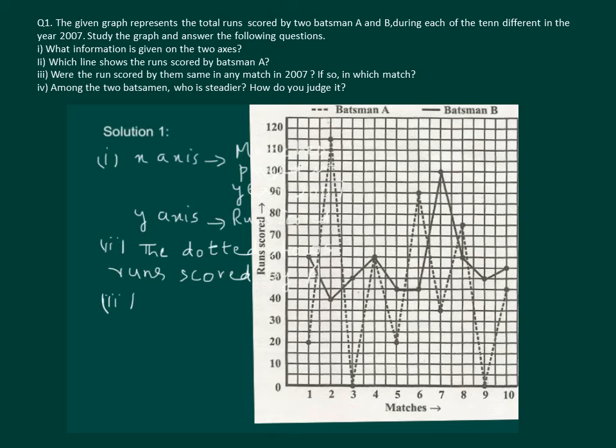On the first match, batsmen A made 20 while batsmen B made 60 runs. B made 40 in the second match while A made 115 in the second match. Likewise, in the third match both of them made different runs. In the fourth match both the graphs are meeting at 60. And that means both of them made 60 runs in the fourth match.